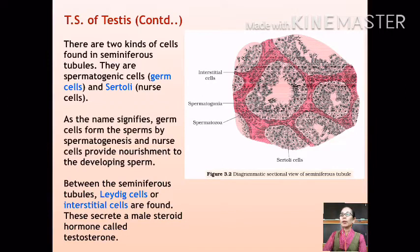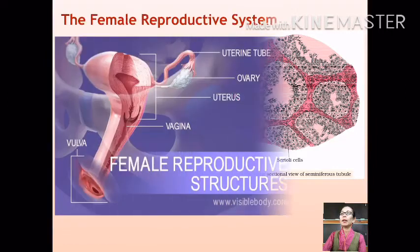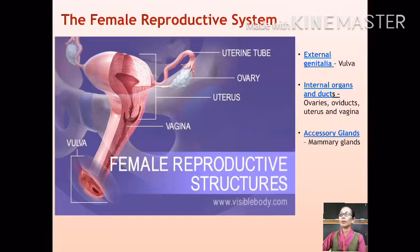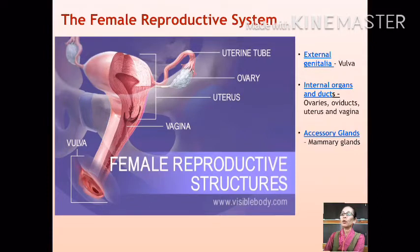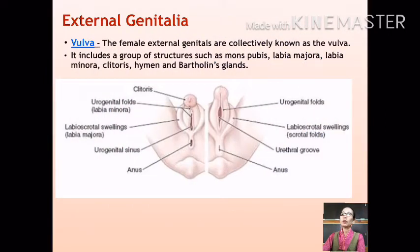Let us now discuss the female reproductive system in some detail. The female reproductive system consists of primary sex organs which are the two ovaries; accessory ducts including vagina, uterus, and oviducts; and the external genitalia or organs collectively known as the vulva.